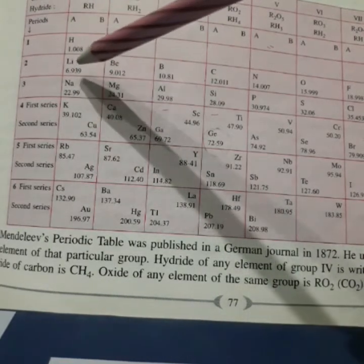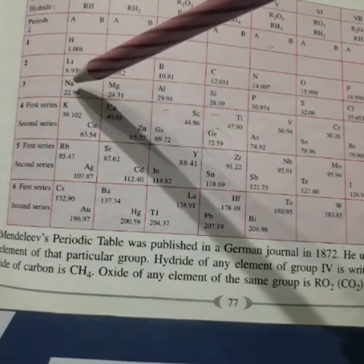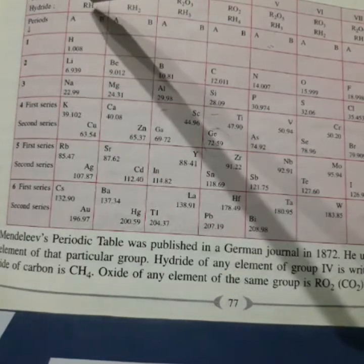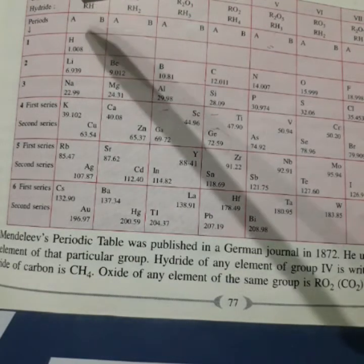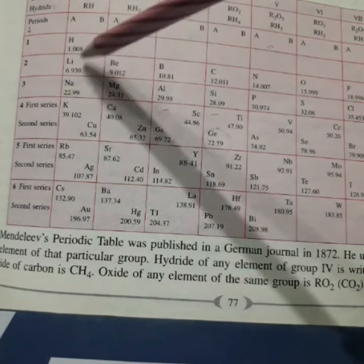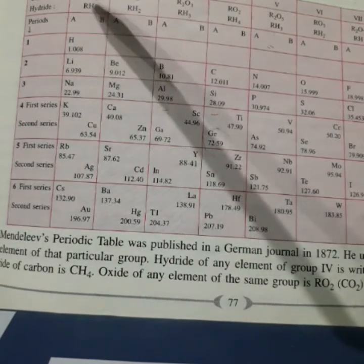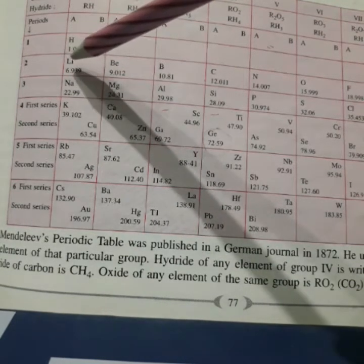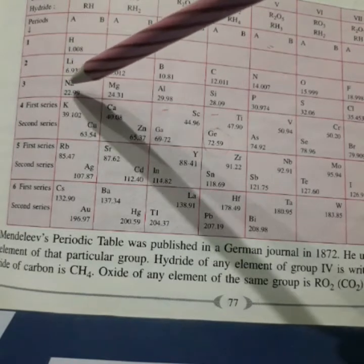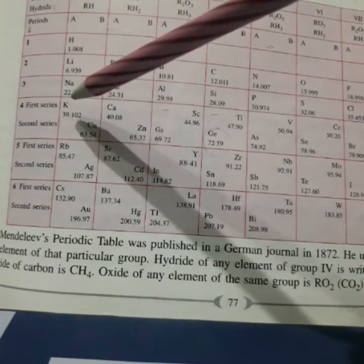Same way, when all three metals, lithium, sodium and potassium react with oxygen, they will form respective oxide with the same formula, R2O. Lithium, Li2O. Sodium, Na2O. Potassium, K2O.